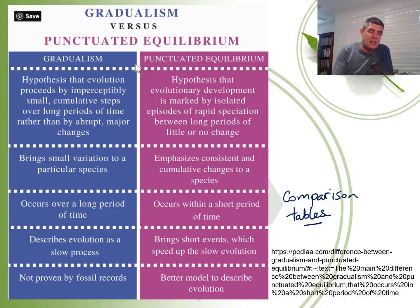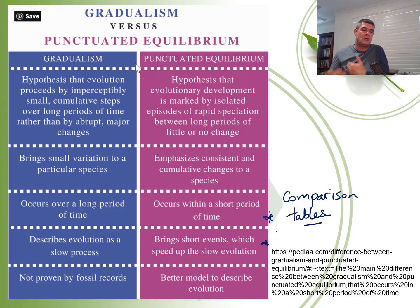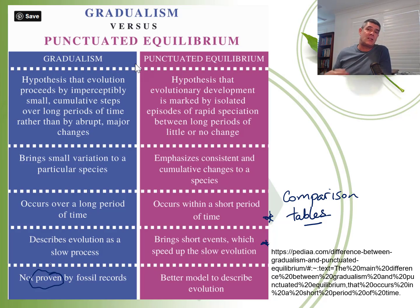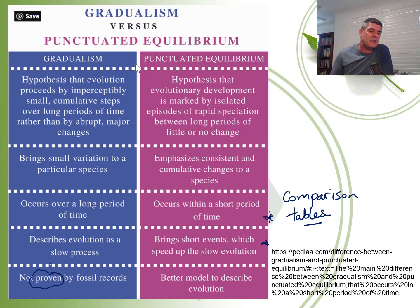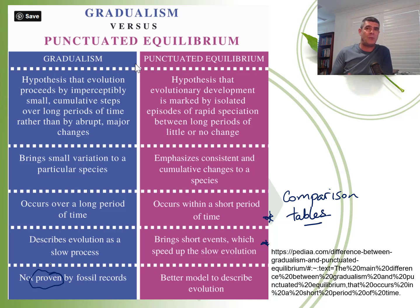The time period is very important: change occurring very slowly over long periods versus in bursts over short periods. In science, we don't tend to prove things — we find evidence that supports or contradicts ideas. I wouldn't say that gradualism is not proven by the fossil record; there are places in the fossil record that support the idea of gradualism, and there are also areas that support the idea of punctuated equilibrium. What we're trying to do is fit our models to the data we have in order to use those models to explain the data.